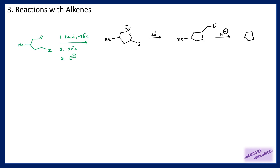We can use carbonyl compounds as electrophile, alkyl halides, or acyl chlorides. An important point is that these two groups will be cis to each other, so we will predominantly have the cis isomer. Remember this point.